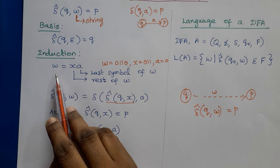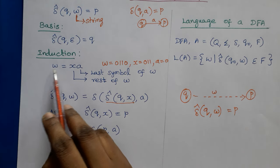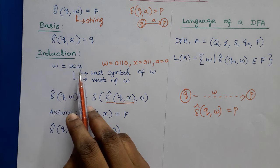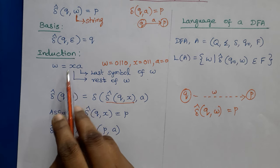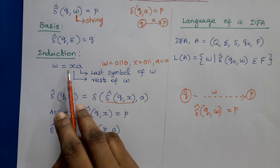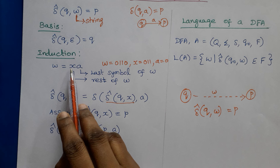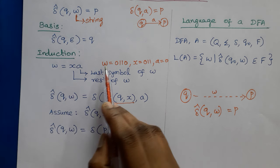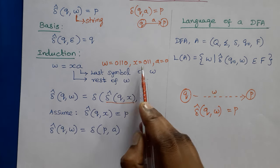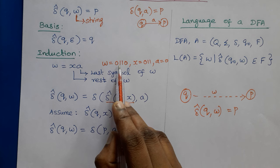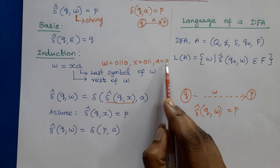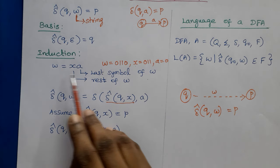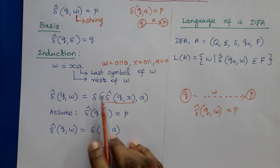For the induction step, we take a larger string W in the form of XA, where A is the last symbol of W and X is the remaining symbols of W — that is, all symbols except the last one. For example, if W is 0110, then X is 011 (all symbols except the final one) and A is the final symbol 0. This is written this way because it is a recursive definition.